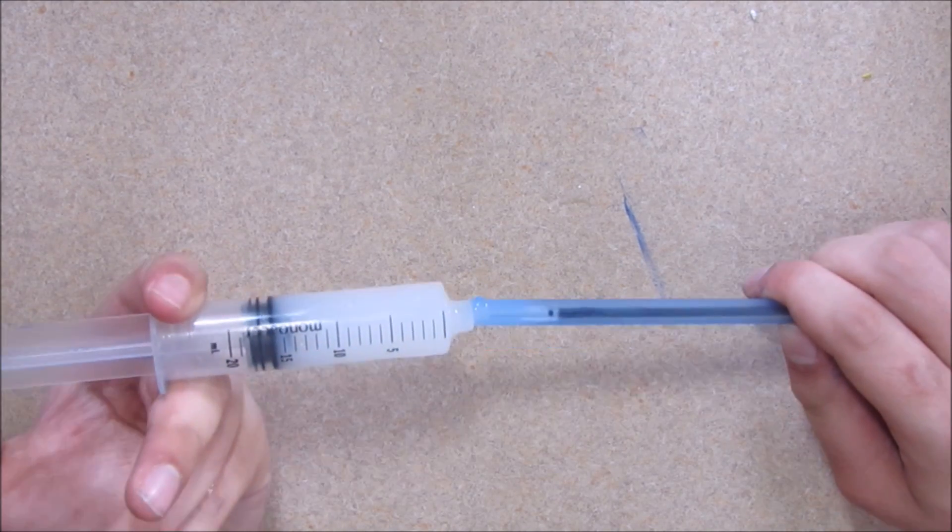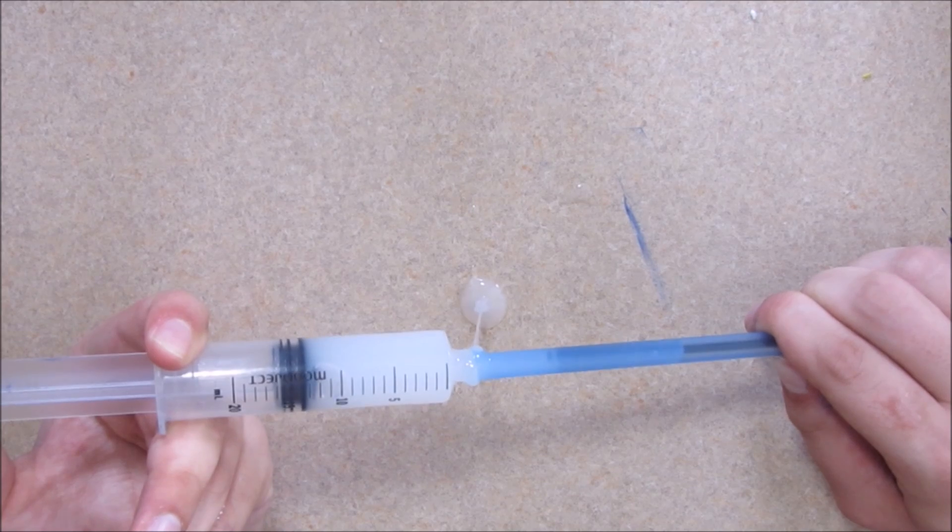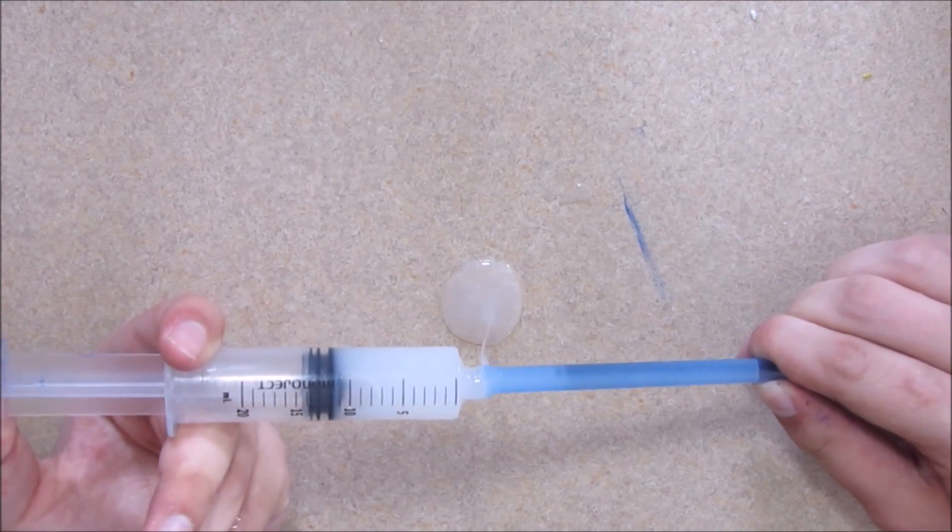Mix a small batch of Ecoflex 0050. Fill the mold by injecting rubber with a plastic syringe. 20 ml of rubber is enough to fill all 3 molds.